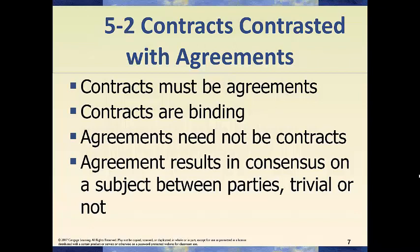All contracts are agreements, but not all agreements are contracts. Contracts are binding; agreements aren't necessarily contracts, and sometimes they're not binding. The book gives a good example: if you and a friend agree to meet at a restaurant at 6 o'clock and your friend doesn't show up, that might make them a bad friend, but you can't take them to court over it. It was a social agreement, not a contract.